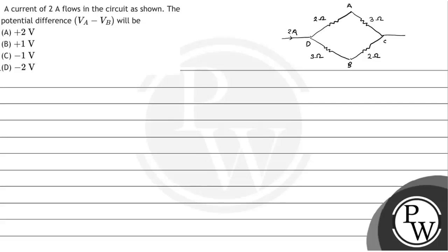Hello, let us read the question. The question is that a current of 2A flows in the circuit as shown. The potential difference Va minus Vb will be found between point A and point B.